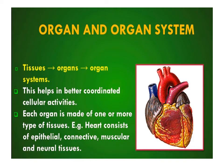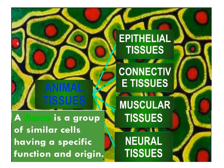Cells, tissues, organs, and organ systems exhibit division of labor and contribute to the survival of the body as a whole. Each organ is made up of one or more types of tissues. For example, the heart consists of epithelial, connective, muscular, and neural tissues.